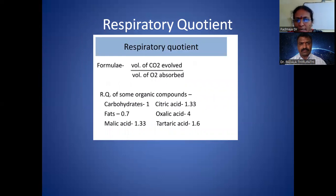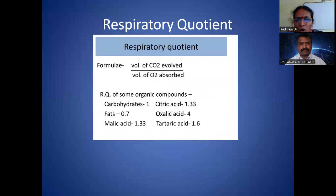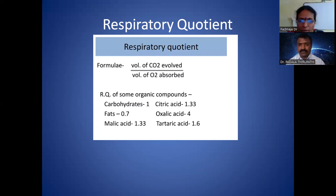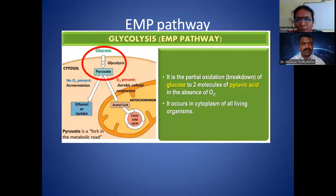The respiratory quotient (RQ) is defined as the volume of CO₂ evolved divided by the volume of O₂ absorbed. For glucose (C₆H₁₂O₆), six CO₂ are produced and six O₂ are absorbed, so the RQ equals one. For carbohydrates, RQ = 1; for fats, RQ is below 1; for organic acids like citric acid, oxalic acid, tartaric acid, and malic acid, RQ is above 1. This is an important formula likely to be asked in exam questions.